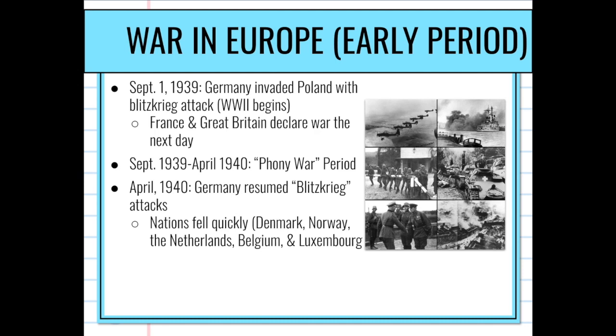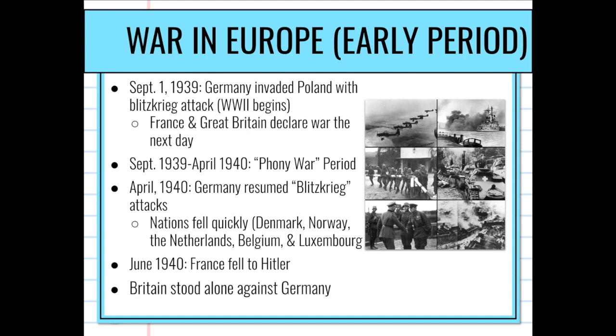Germany takes Denmark, Norway, the Netherlands, Belgium, and Luxembourg like dominoes. By June 1940 he invades and conquers France — a big deal since France had hammered Germany in the Treaty of Versailles. By June 1940 the only country in Europe not neutral or on Germany's side that still stood was Great Britain, standing alone against Germany.